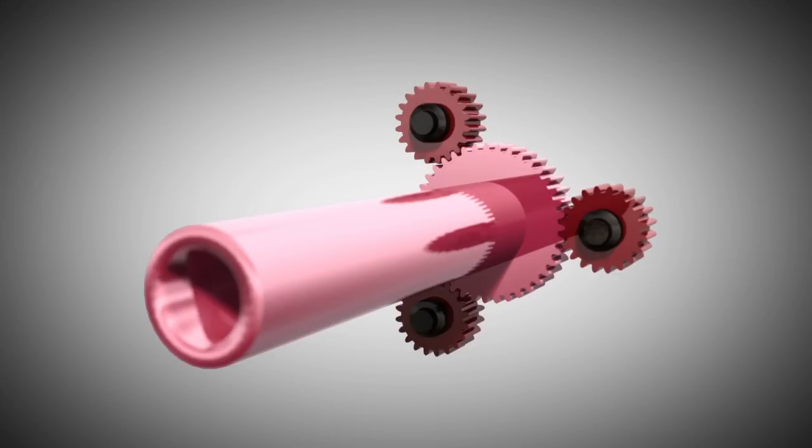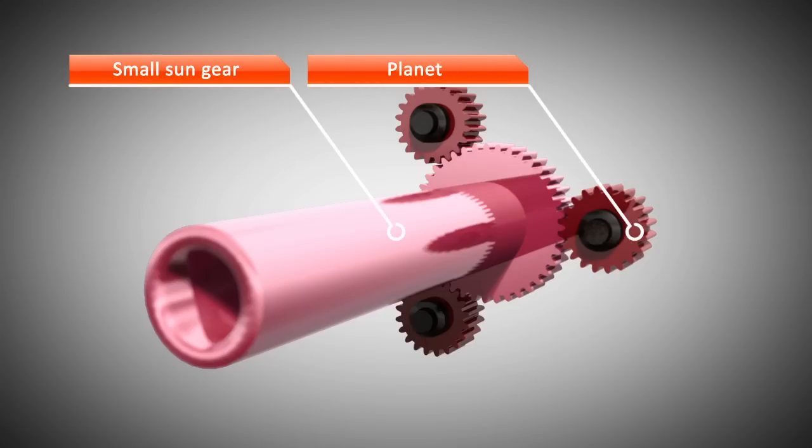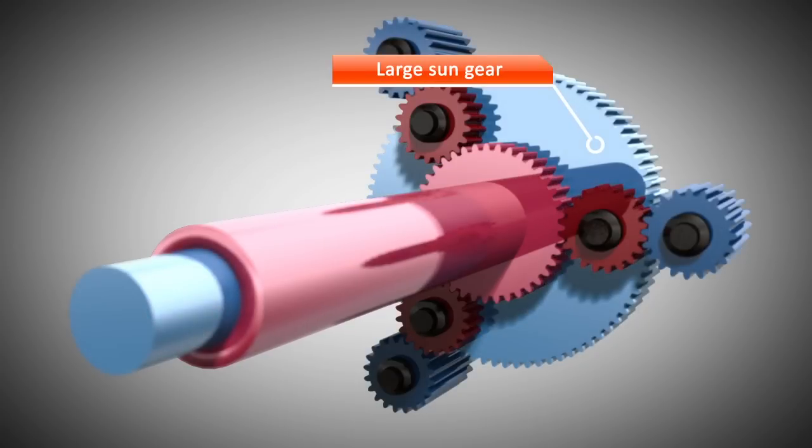A Ravigneaux gear set is a double planetary gear set. It consists of a small sun gear that meshes with three gears that surround it like planets. The shaft of a large sun goes through the hollow shaft of the small sun.